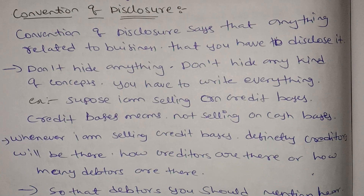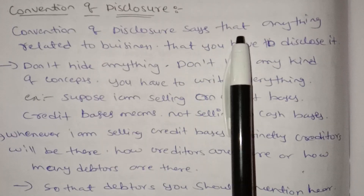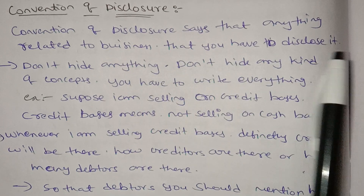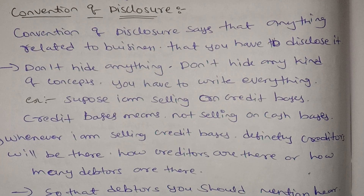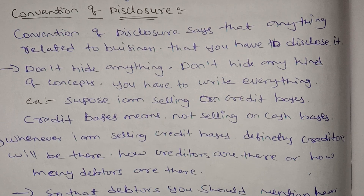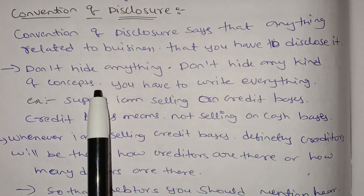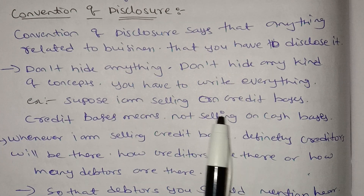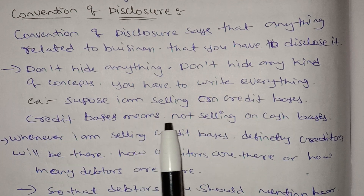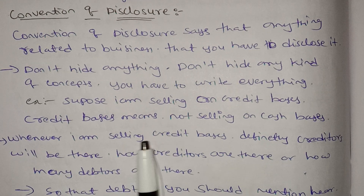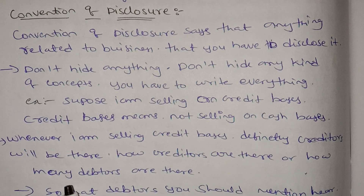Convention of Disclosure says that anything related to business, you have to disclose it. Don't hide anything; don't hide any kind of concept. You have to write everything. Suppose I am selling on a credit basis — credit basis means not selling on a cash basis. Whenever I am selling on a credit basis, definitely creditors will be there.